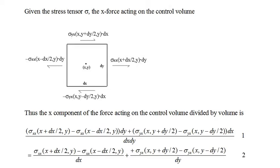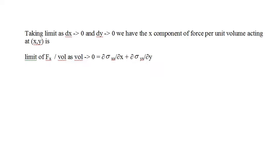This diagram shows the x-direction forces acting on the control volume, obtained by multiplying the x-direction tractions in the previous slide by the length of the side to which they are applied. Equation 1 is the sum of the x-direction forces divided by the control volume, and equation 2 is that equation rearranged. Taking the limit as dx and dy approach zero, the x component of force per unit volume at point xy is given by the partial derivative of sigma_xx with respect to x plus the partial derivative of sigma_yx with respect to y.